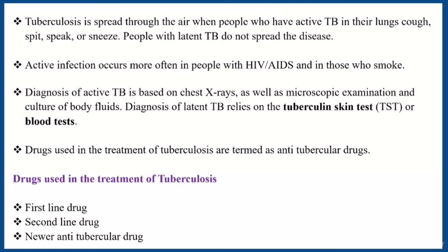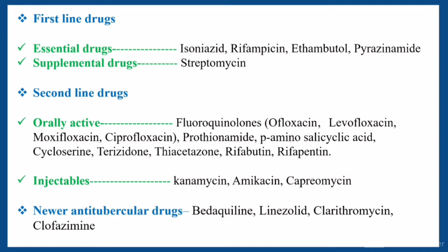We will now see the classification. There are three classification types. For the first one, anti-tubercular agents are classified into first line drugs, second line drugs, and newer anti-tubercular drugs. The first line drugs are again subdivided into two types: essential drugs and supplemental drugs.